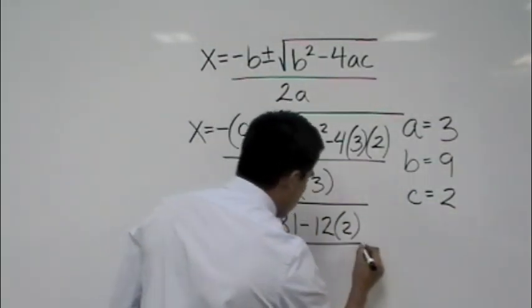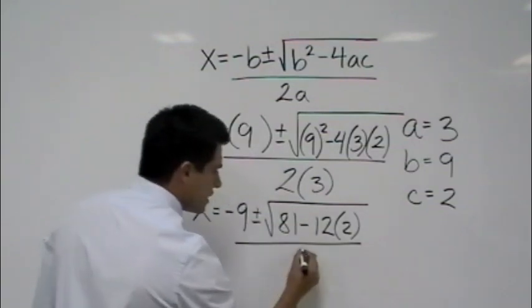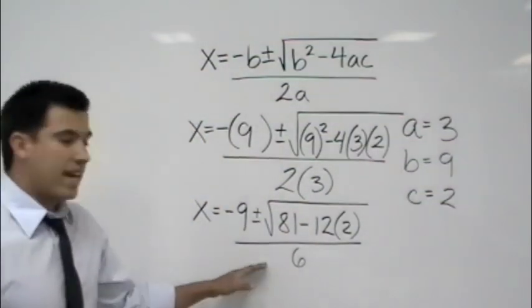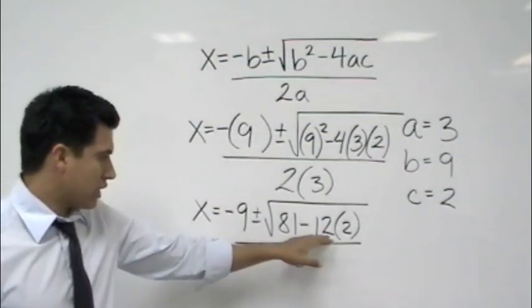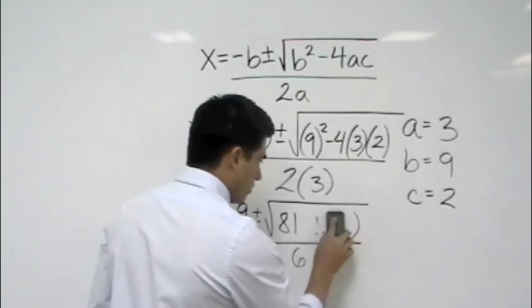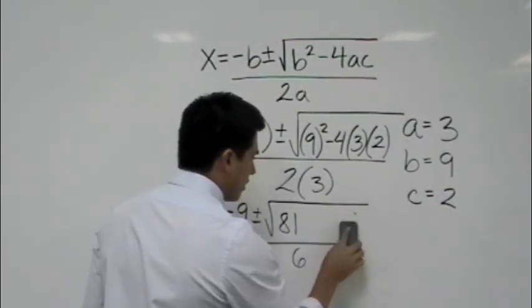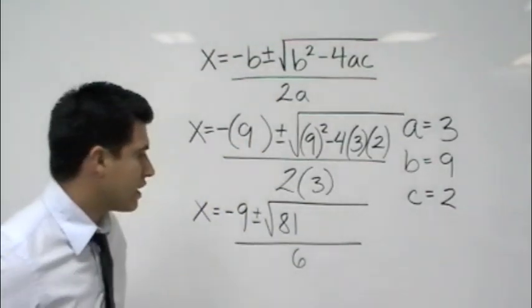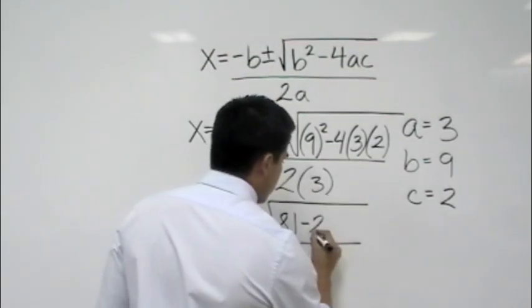all over 2 times 3 is 6. And then, last, you just go ahead and multiply negative 12 times 2, which would give you a negative 24. So let's go ahead and put that in there. So we would have negative 24. Good.